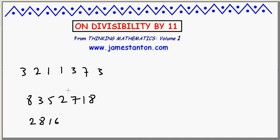Alright, so first of all, what is the rule for divisibility by 11? So apparently if I take a number like this one, what have I got? 3,211,373.